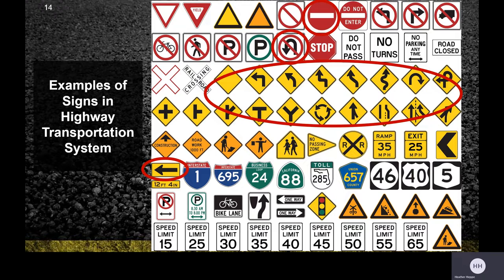The orange signs in the following row are construction signs. Then we have a school crossing sign that looks like a little house, a no passing zone pennant, and below that, interstate signs as markers to tell us where we are on a roadway. At the bottom we can see regulatory speed limit signs ranging from 15 to 65.